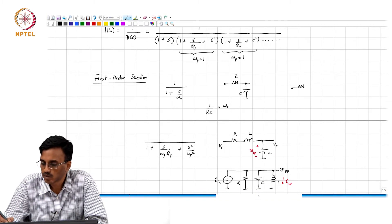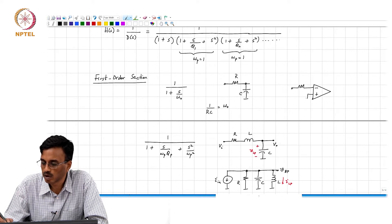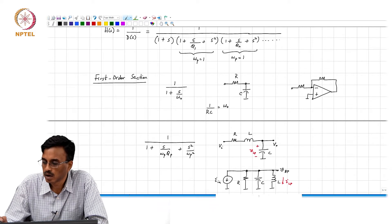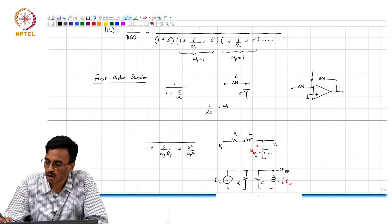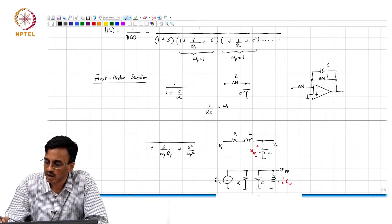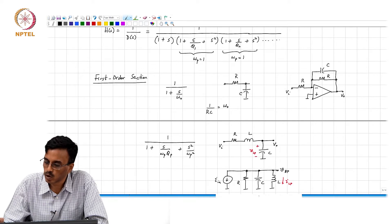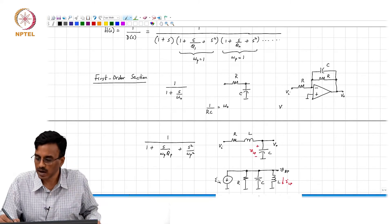Very good. We have seen this before in the earlier classes. This is an example of how one could do it. This is R, this is C, and this is R. This is V_i and this is V_o.